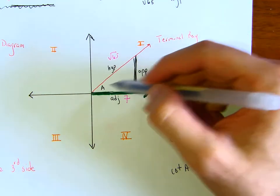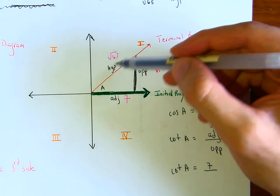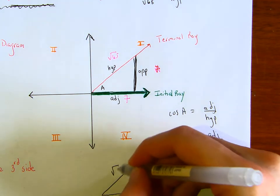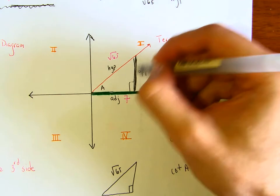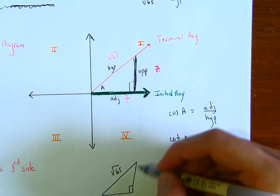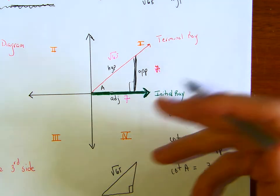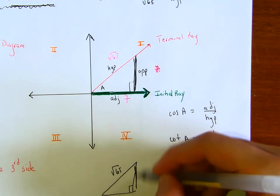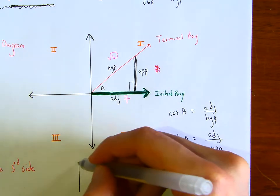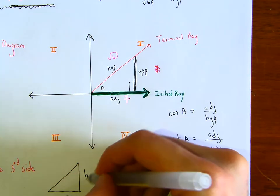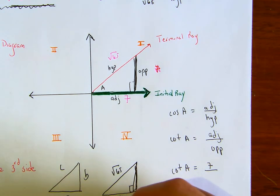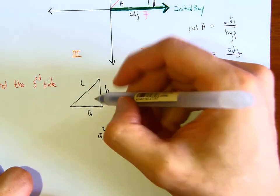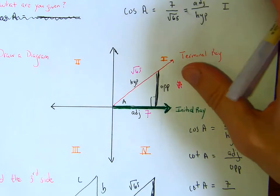Knowing trigonometry, notice the triangle we have: from here to here is 7, from here to here is square root of 65, and we know this has to be a right angle because we're drawing a perpendicular line to the x-axis. Can we find the opposite side? What would we have to do? We have to use the Pythagorean theorem: a squared plus b squared equals c squared.